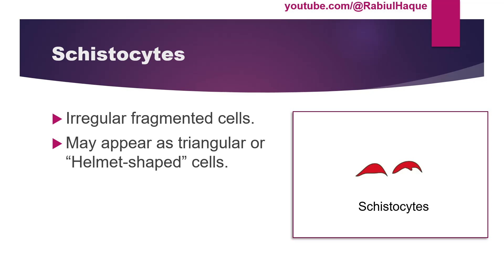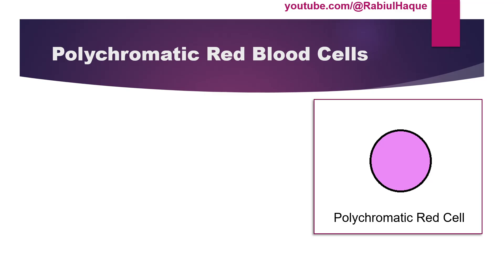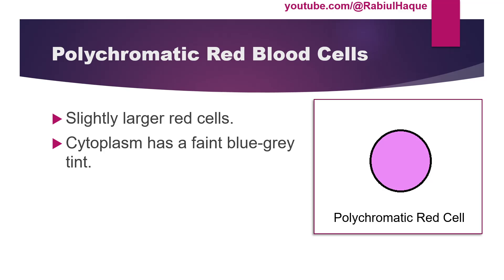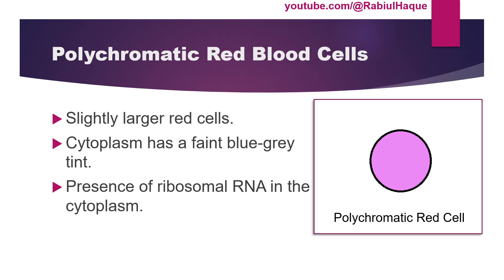Another term is polychromatic red blood cells. These cells are slightly larger than typical red blood cells and will have a faint blue-gray tint in the cytoplasm due to the presence of ribosomal RNA. Polychromasia means multiple colors, so these red blood cells will not only have reddish cytoplasm but also a faint blue-gray tint.